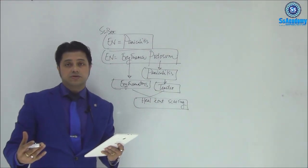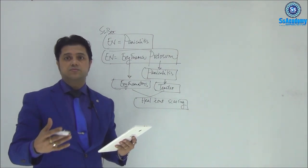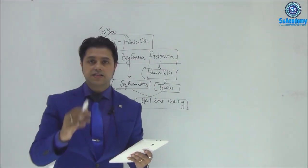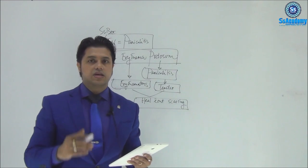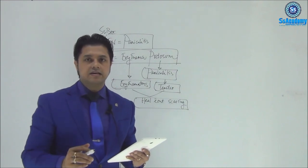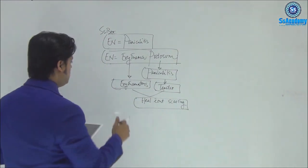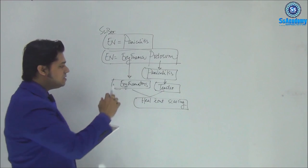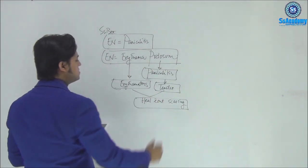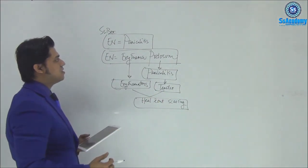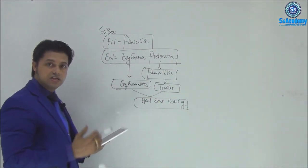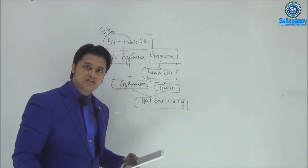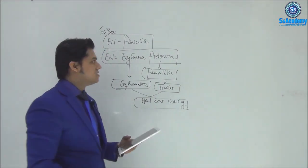So I'd like to give a summary box. Erythema nodosum — panniculitis — panniculitis is an inflammation so it will be tender. It is an erythematous nodular lesion that heals without scarring. These are important features. This is happening in the shins — bilateral lesion.